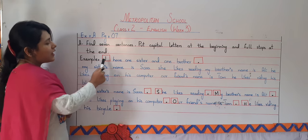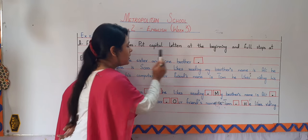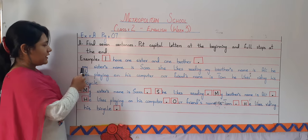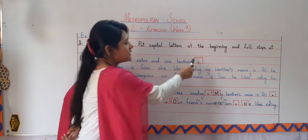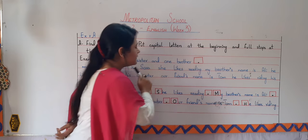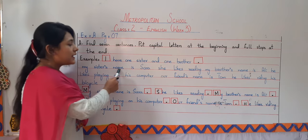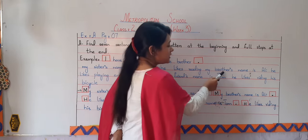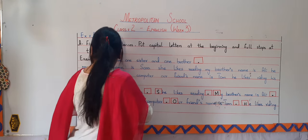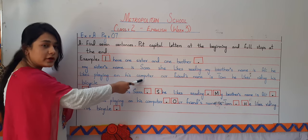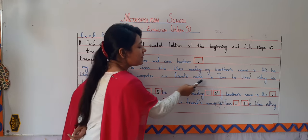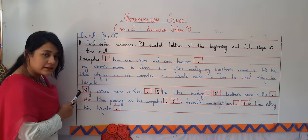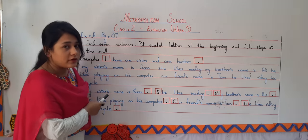Look at the example: 'I have one sister and one brother.' First we have to put a capital letter — we have to change the alphabet into capital form — and by the end of the sentence, put a full stop. The paragraph is: 'My sister's name is Sarah. She likes reading. My brother's name is Ali. He likes playing on his computer. Our friend's name is John. He likes riding his bicycle.'